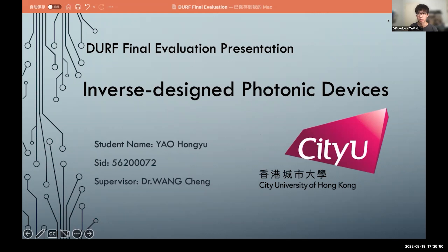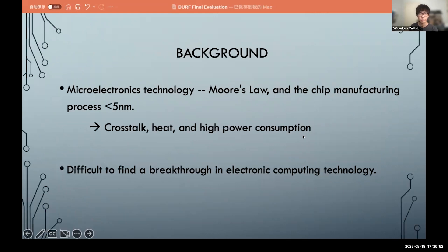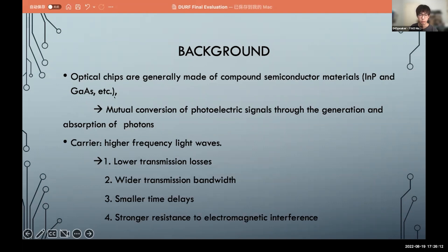Let me introduce the background. The microelectronic technology and now the chip manufacturing process is less than five nanometers. It has crosstalk, heat, and high power consumption problems. And due to Moore's Law, it's difficult to find a breakthrough in this field.